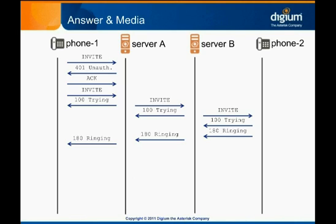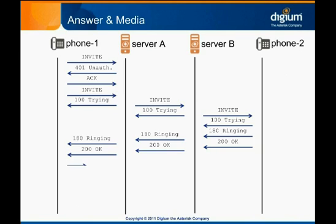In this example, we assume somebody answers the ringing phone 2. When this happens, phone 2 sends a message to server B called 200 OK. This message generically means that the previous request was successful — in this dialog, that means phone 2 was answered. The 200 OK message is propagated back through each of the SIP calls until phone 1 receives it. Phone 1 acknowledges receiving the 200 OK, and the servers in turn propagate that acknowledgement back to phone 2.